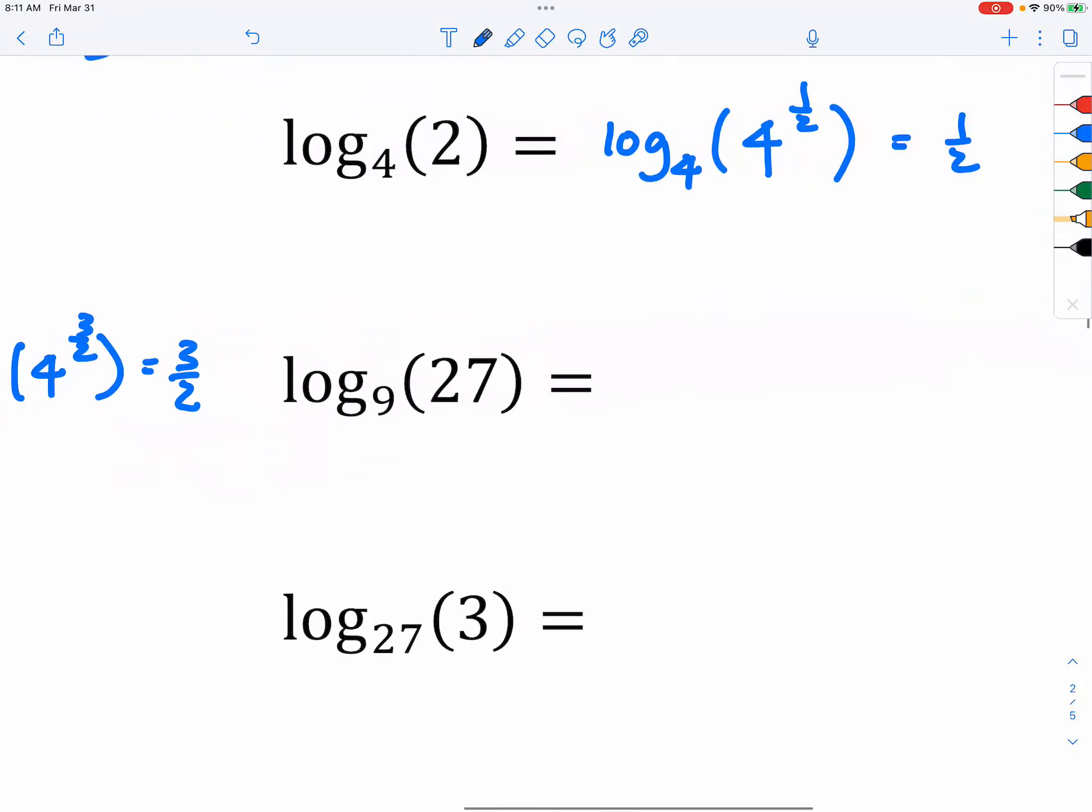What about 27? How do you get 27 from 9? Well, first, you've got to square root the 9, which becomes 3. And then you raise it to the 3rd power.